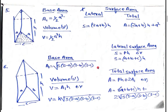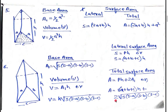To find the lateral surface area, we use the formula: S = p × h, or S = (a + b + c) × h. The total surface area of this prism is A = p × h + 2A₁, or A = (a + b + c) × h + 2√(s(s−a)(s−b)(s−c)).